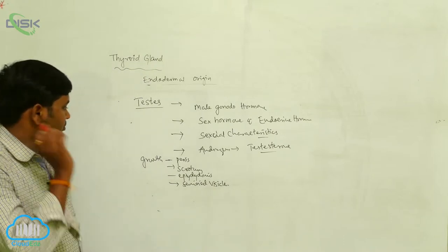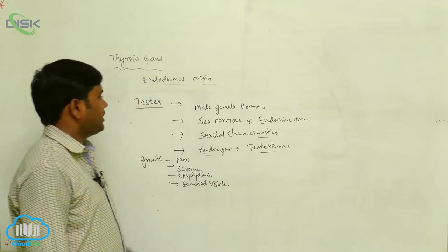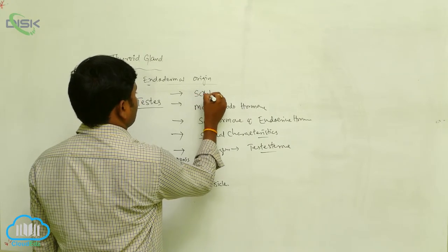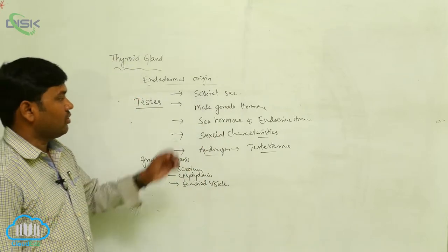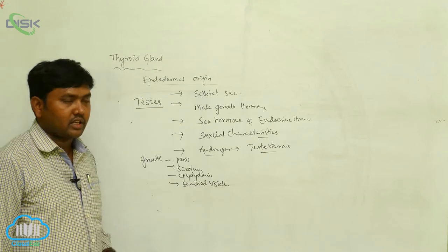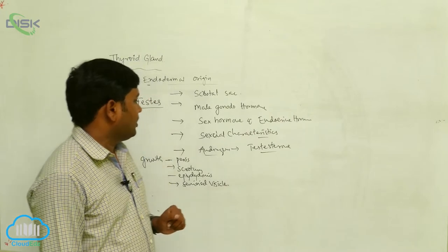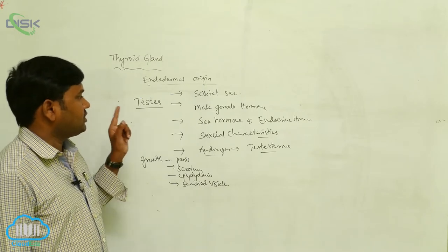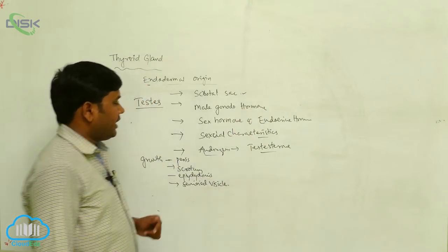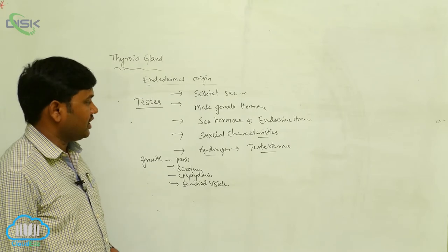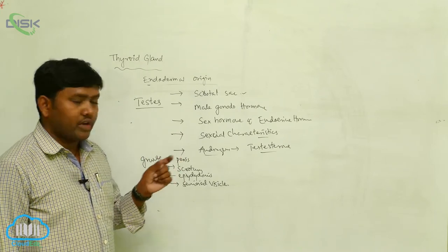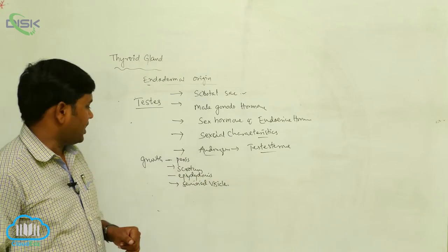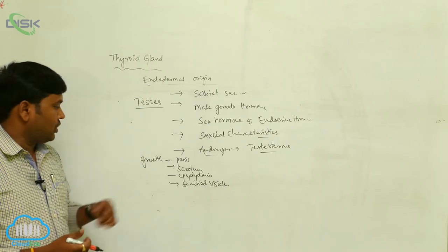The testis are located in the scrotal sac. They act as both sex hormone and endocrine hormone, producing the sexual characteristics of the organism. The interstitial or Leydig cells lying in the seminiferous tubules produce androgens, the chief example being testosterone. These androgens are responsible for the growth of the penis, scrotum, epididymis, and seminal vesicle.